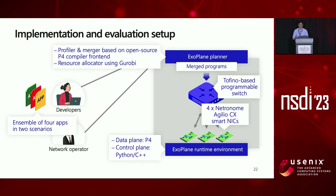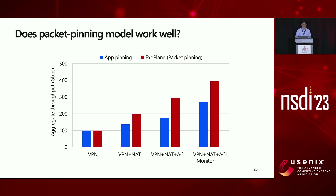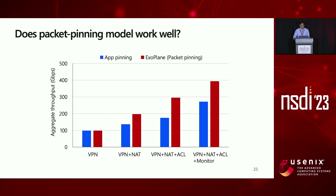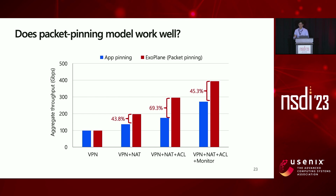We first evaluate the benefit of ExoPlane over the app-pinning model while running four apps. In the app-pinning model, we place an app along with its entire state at the switch if there is room; otherwise, we place it on the external device with the largest remaining capacity. This graph shows the aggregate throughput when running an ensemble of apps. While ExoPlane provides the maximum throughput for each ensemble, app-pinning achieves up to 69% lower throughput, because ExoPlane allows an app to effectively utilize available resources across different devices while app-pinning fixes an app to one device.